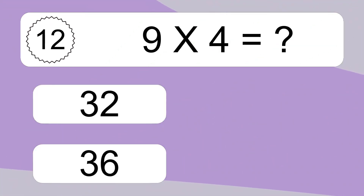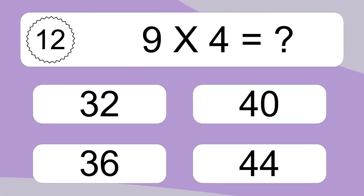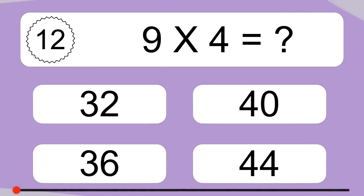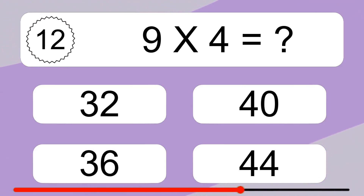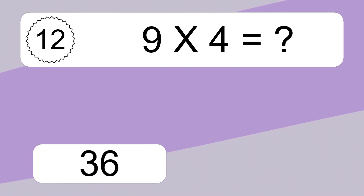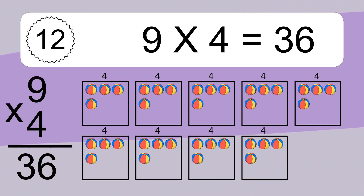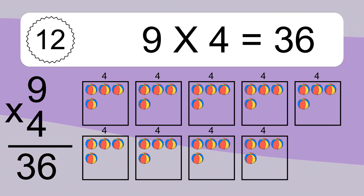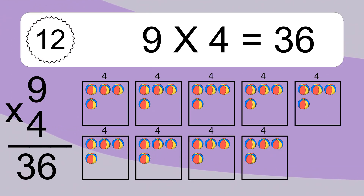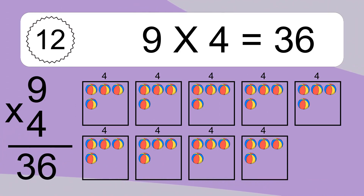9 times 4 equals what? We have 9 boxes, and each box has 4 colorful balls inside. If you count all the balls in all the boxes together, you will have 9 times 4 balls. This equals 36 balls.